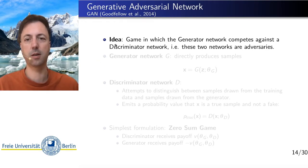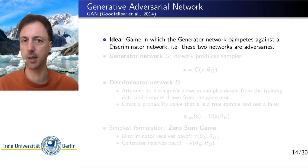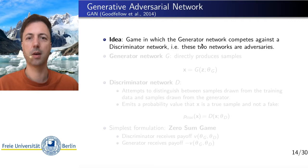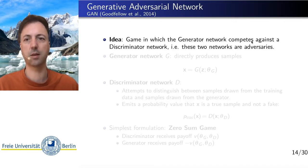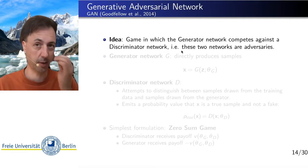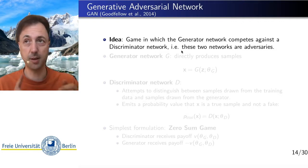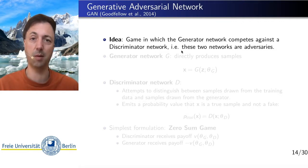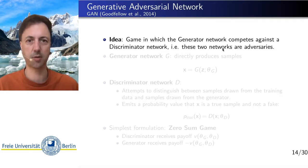The idea of GANs is the following. We are training a generator network, as in variational autoencoders, but this generator network is competing against another network — a discriminator network — and these two networks play a game against each other, so they are adversaries.